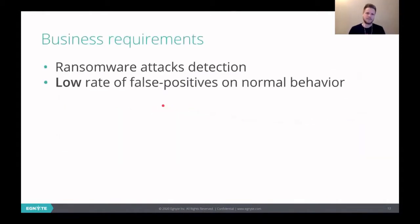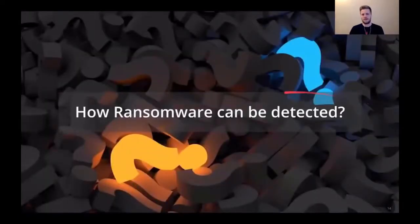So one time the guys from business came to us and told that we need something to detect those ransomware attacks, but it also needs to have a low rate of false positive alerts. Because when we alert a ransomware attack to our customer, we want it to be treated seriously. And the only way of achieving that is having low rate of those false alarms. So we said, okay, we can build that. But first we need to know how the ransomware can be detected.